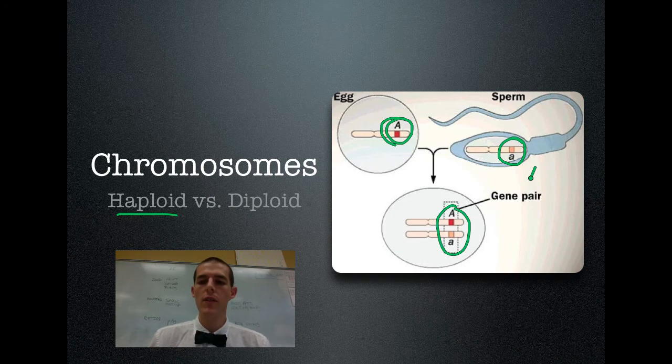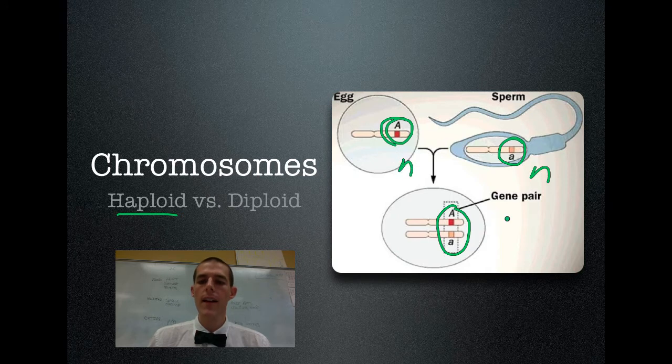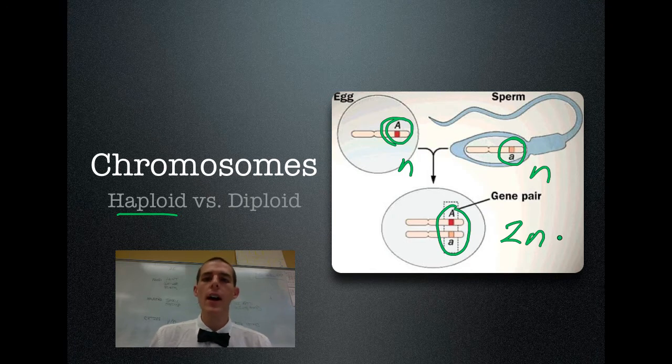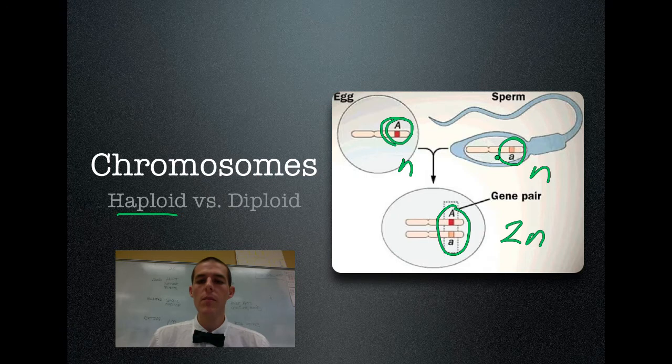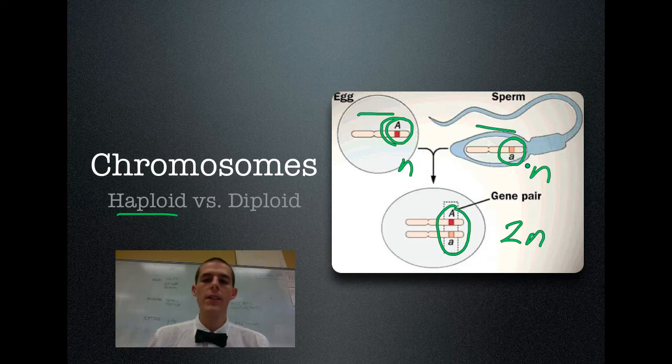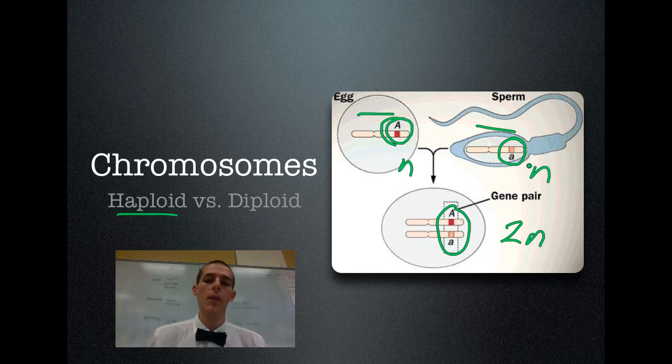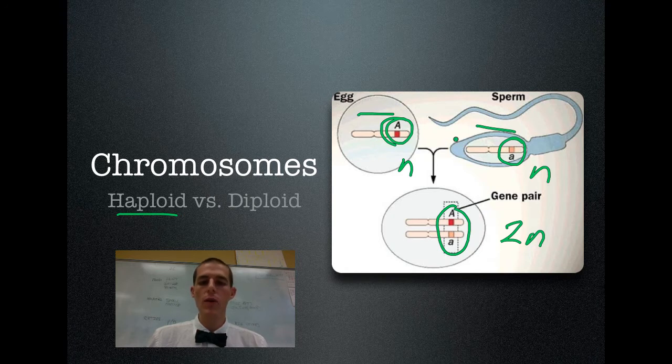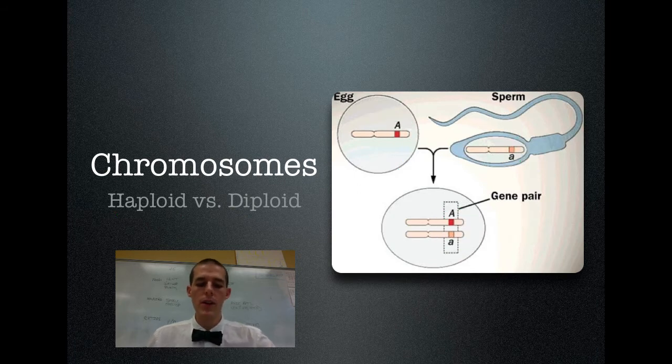I know that these haploid cells are traditionally represented as N, and a diploid cell is represented as being two N. Now, in future videos, we're going to talk about the need for meiosis, but you can see it pretty clearly here. Our bodies need to maintain a set of 46 chromosomes. If these cells were diploid, after fertilization, we would have 92 chromosomes instead of the 46 that our body operates on. So just kind of as a recap, haploid has one chromosome or one gene for each trait. Diploid has got two genes for each trait.